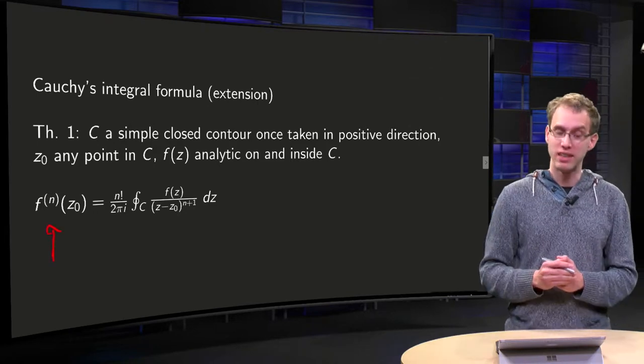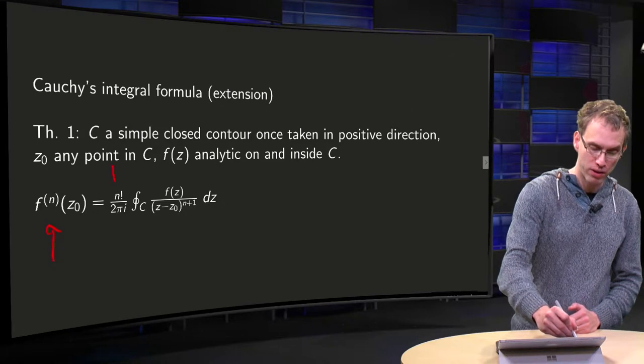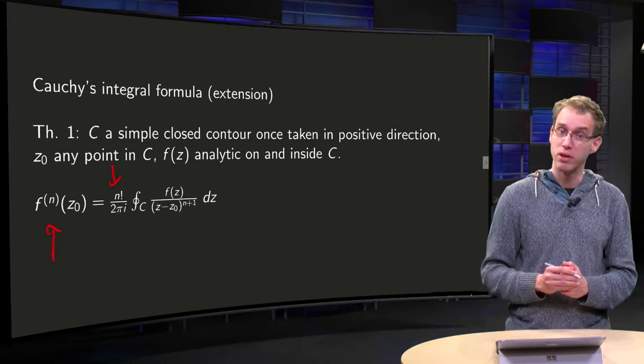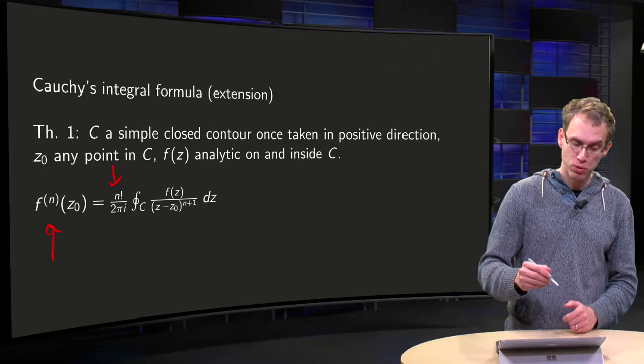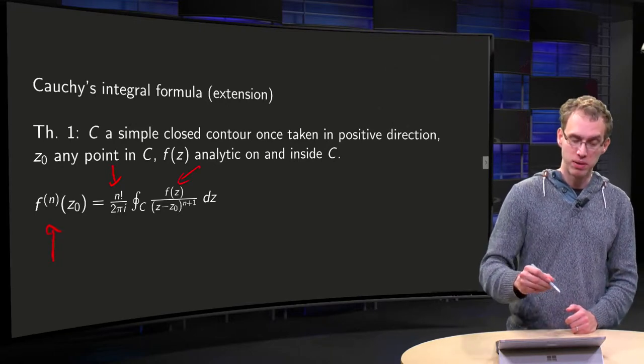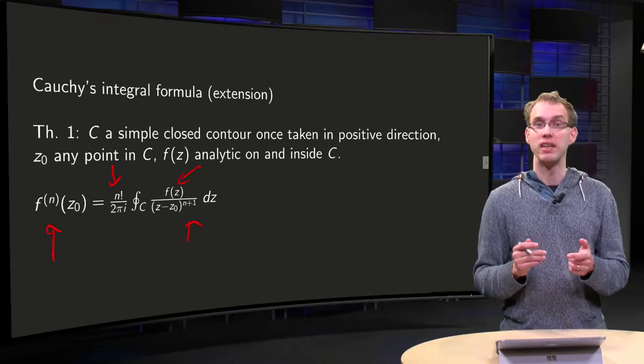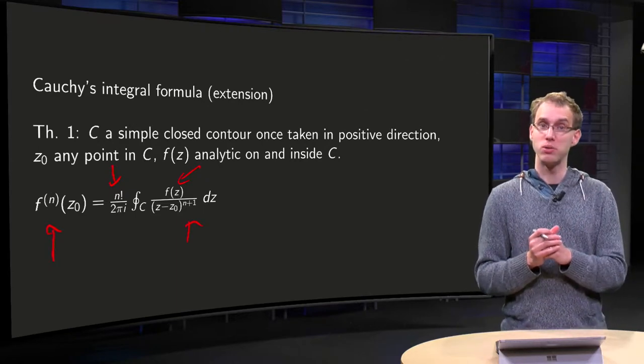The nth derivative at z0 is given by the following formula. You have, instead of a 1 in Cauchy's integral formula, you have n factorial divided by 2πi, still integrate f(z)dz, but then you have to divide by (z-z0) to the power n+1, instead of (z-z0) to the power 1.